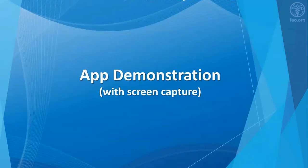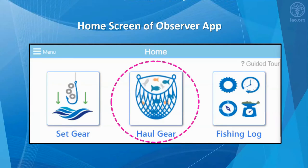Now I will demonstrate the observer app with screen captures. The observer app was designed for a small handheld device. At the top of the home screen, shown in this slide, are the three main menu buttons. For the purpose of this demonstration, I will highlight the screen captures with the dashed pink oval.